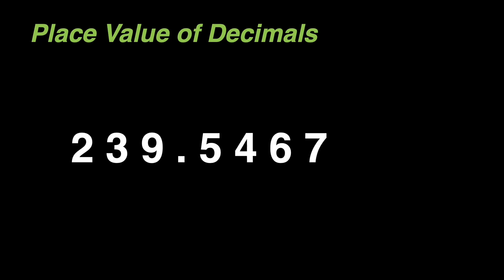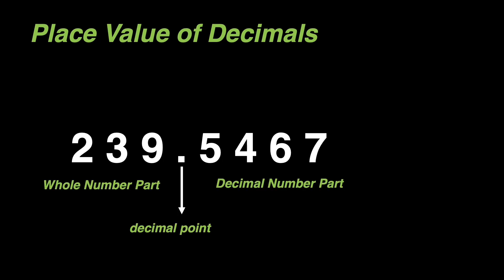The place value chart for whole numbers can be extended to help us read and write decimal numbers. For example, if we have 239 and 5 thousand four hundred sixty-seven ten-thousandths: this is our decimal point, this is our whole number part, and this part is the decimal number part.